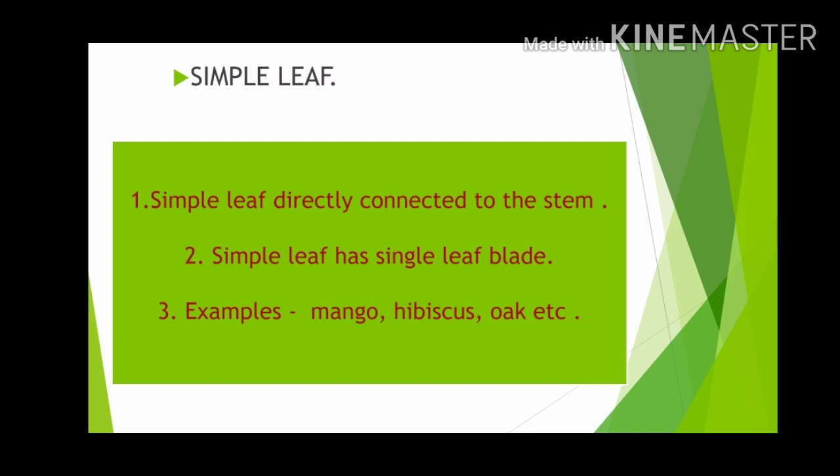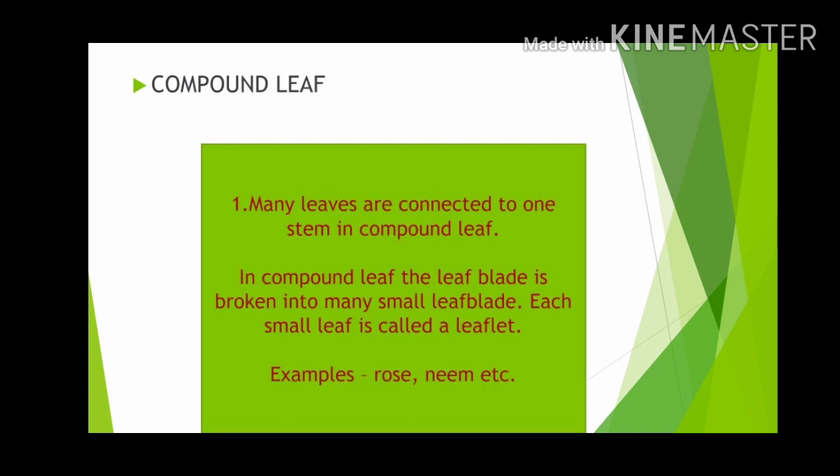In some plants the leaf is connected directly to the stem by a stalk. These types of leaves are called simple leaves. A simple leaf has a single leaf blade. Some plants like mango, hibiscus, oaks, and black cherries have simple leaves.